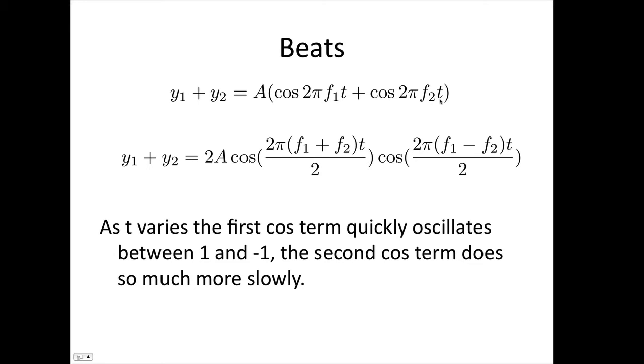Using our rules for adding cos functions, this becomes cos of the sum times cos of the difference. So we end up with 2A cos(2π(f₁+f₂)t/2) cos(2π(f₁-f₂)t/2).